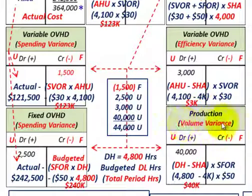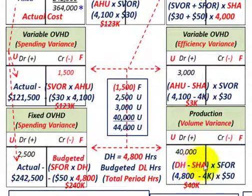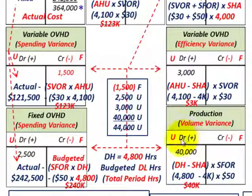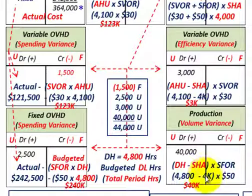The production volume variance is associated with fixed overhead. Take denominator hours 4,800 minus standard hours allowed 4,000 = 800 hours difference, times SFOR $50 per hour = $40,000 unfavorable. We debit the production volume variance for $40,000 because the budgeted denominator hours of 4,800 exceed the standard hours allowed of 4,000 by 800 hours.